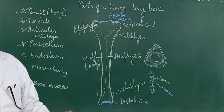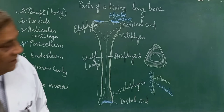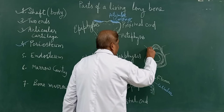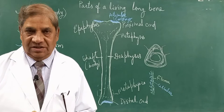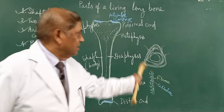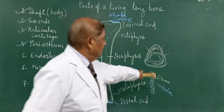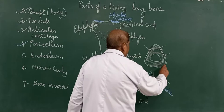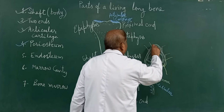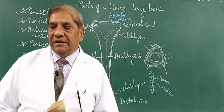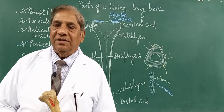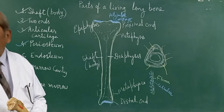This periosteum is supplied by blood vessels — the periosteal blood vessels — which also supply blood to the outer surface of the bone, as seen in the cross-section. Furthermore, periosteum is very sensitive to pain because it is innervated by sensory nerves. This is the reason that any fracture in the bone is very painful — those who have had a fracture must have felt that it is very painful because the periosteum is sensitive to pain.